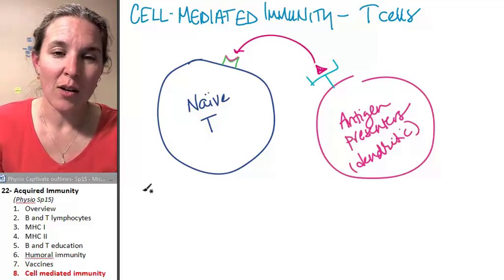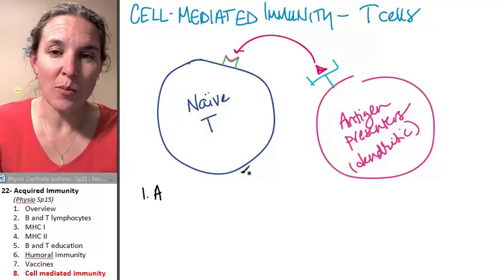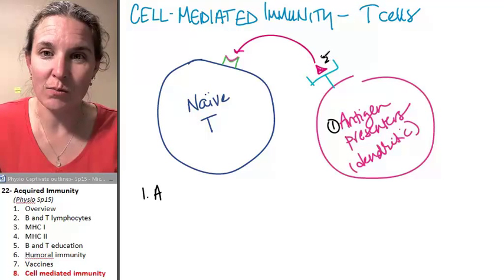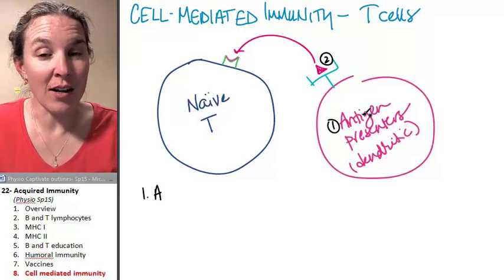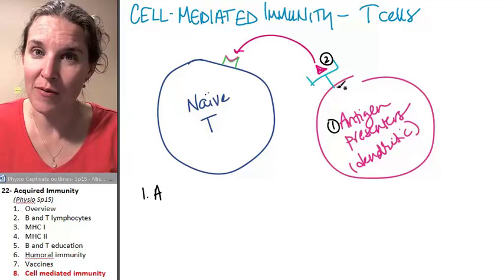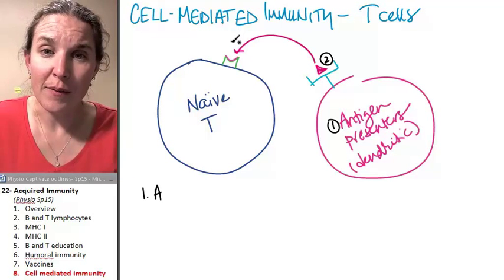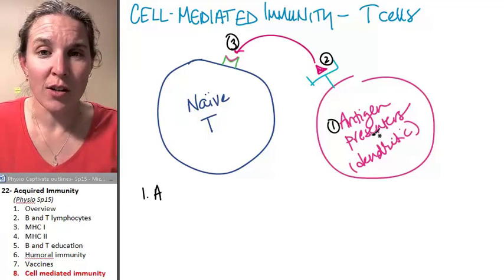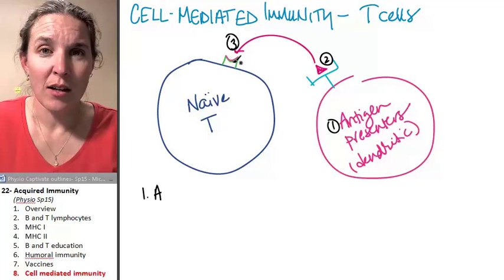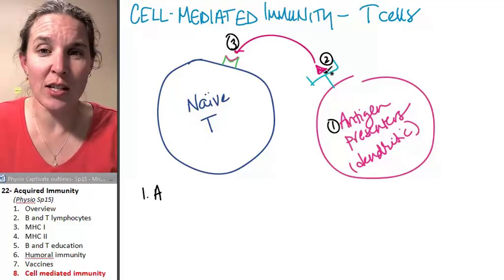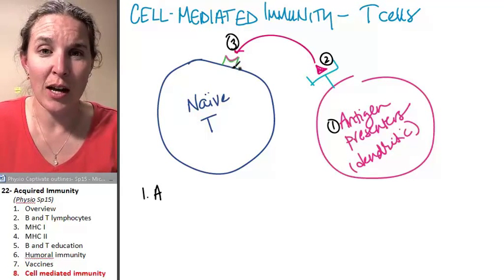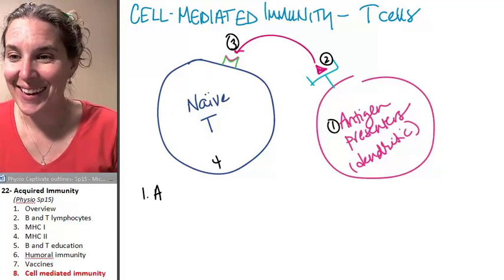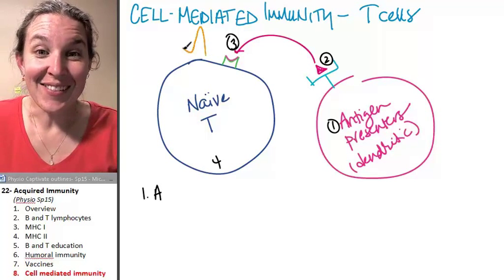Shouldn't I write something down? One, antigen is presented on antigen-presenter's MHC2 platform. Two, antigen-presenter binds. Three, antigen-presenter's MHC2 platform binds to naive T cell receptor. Four, naive T cell gets activated.